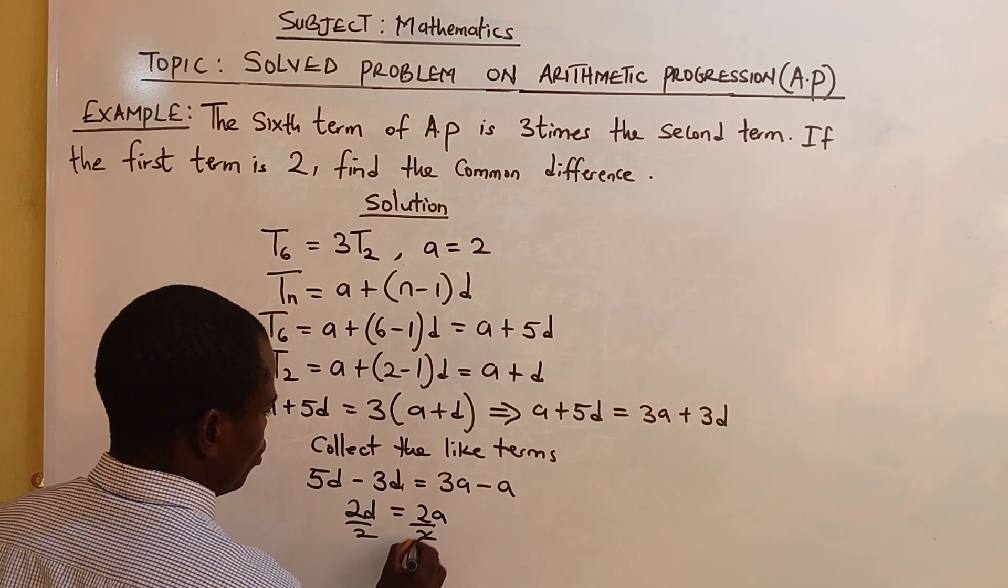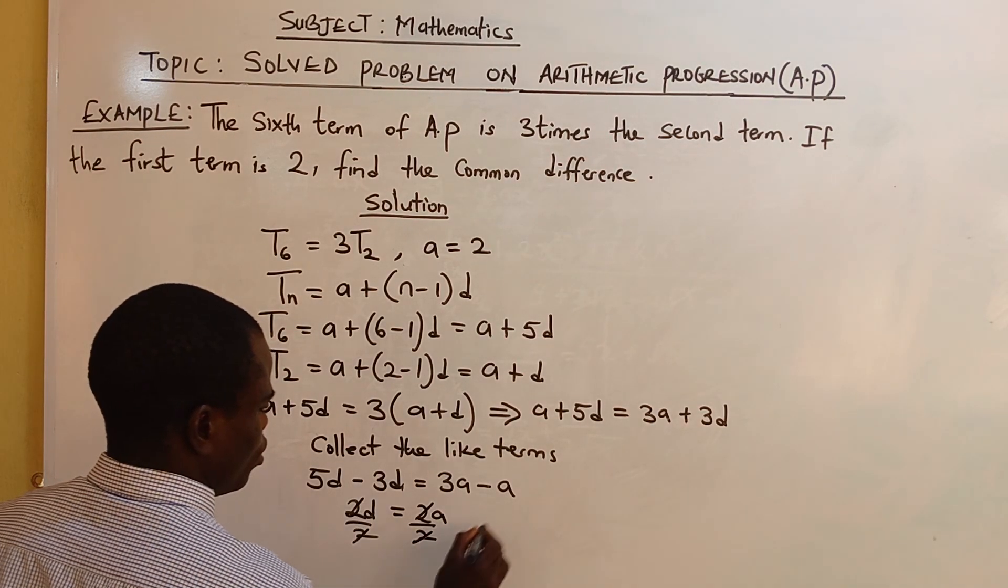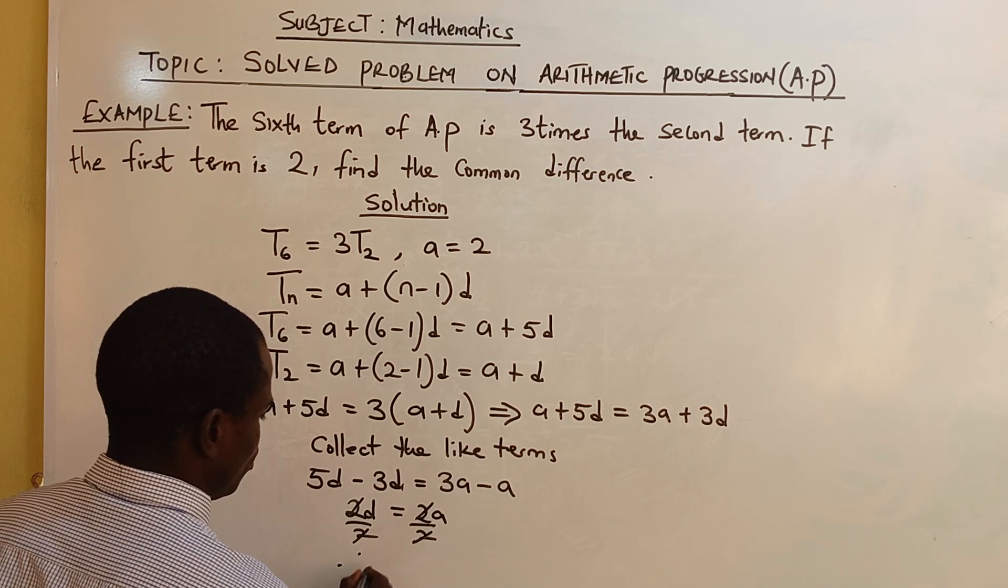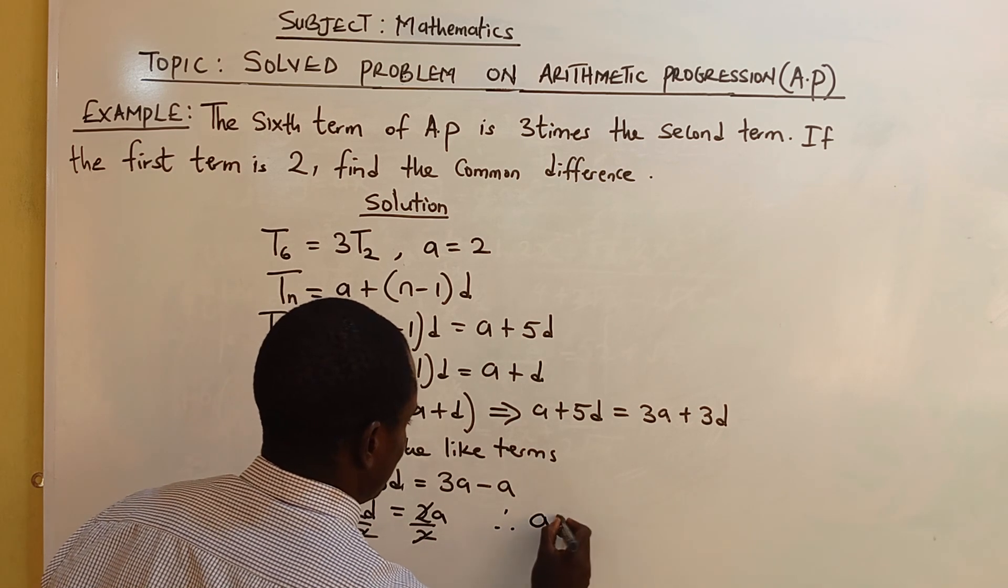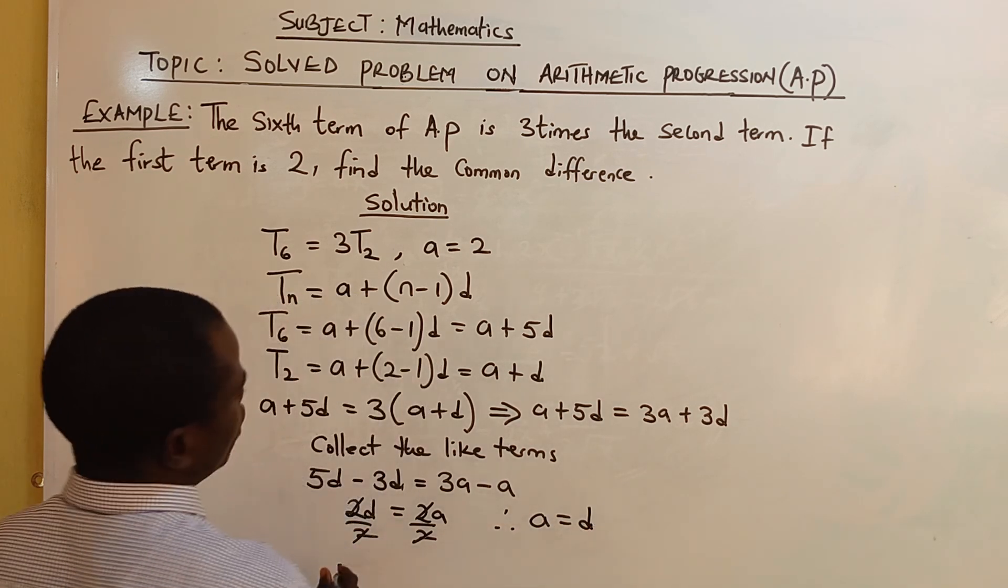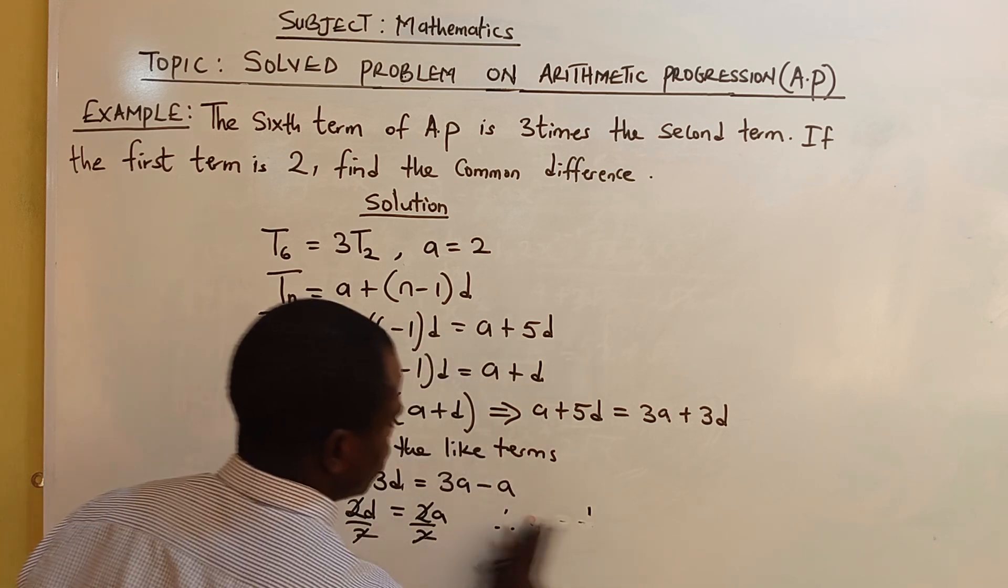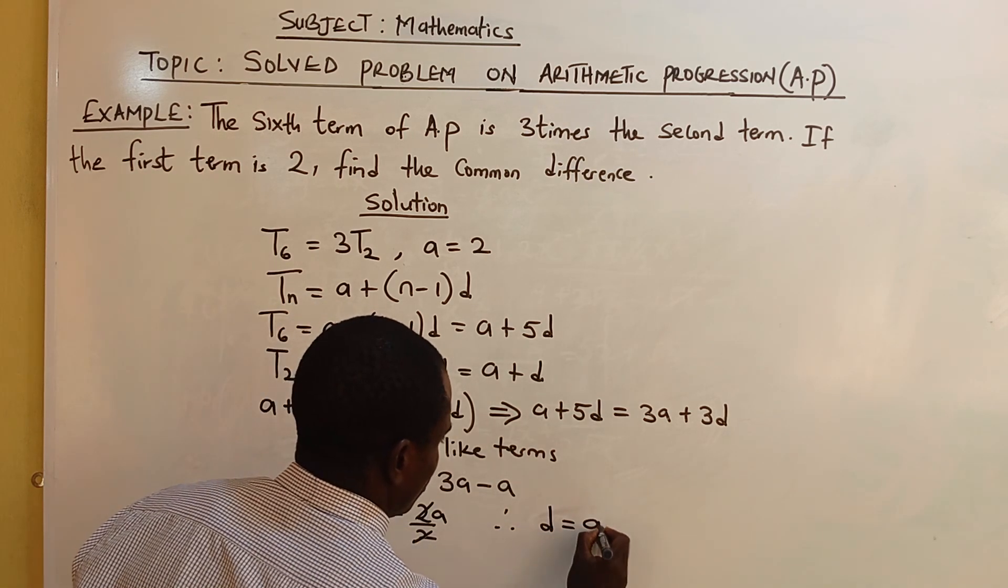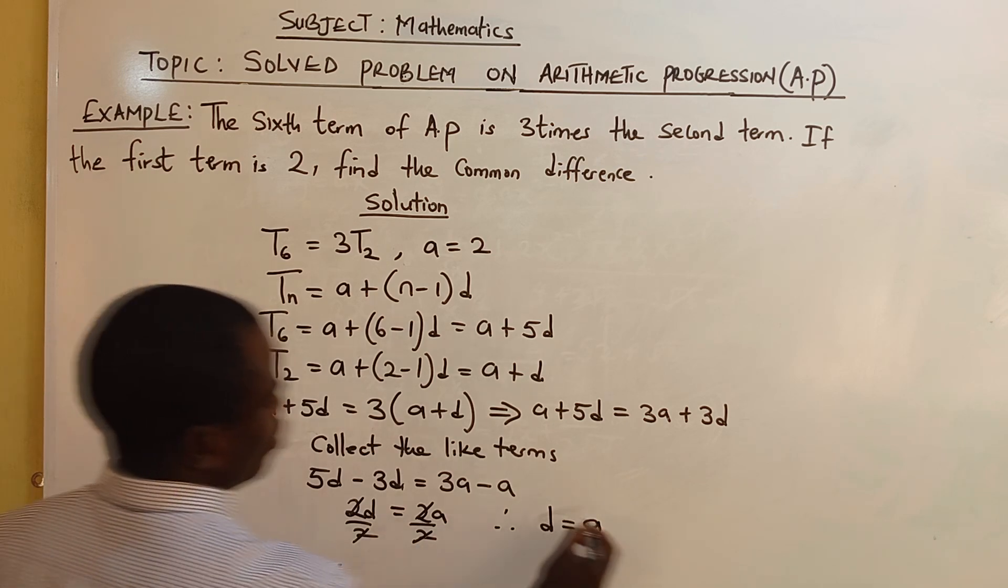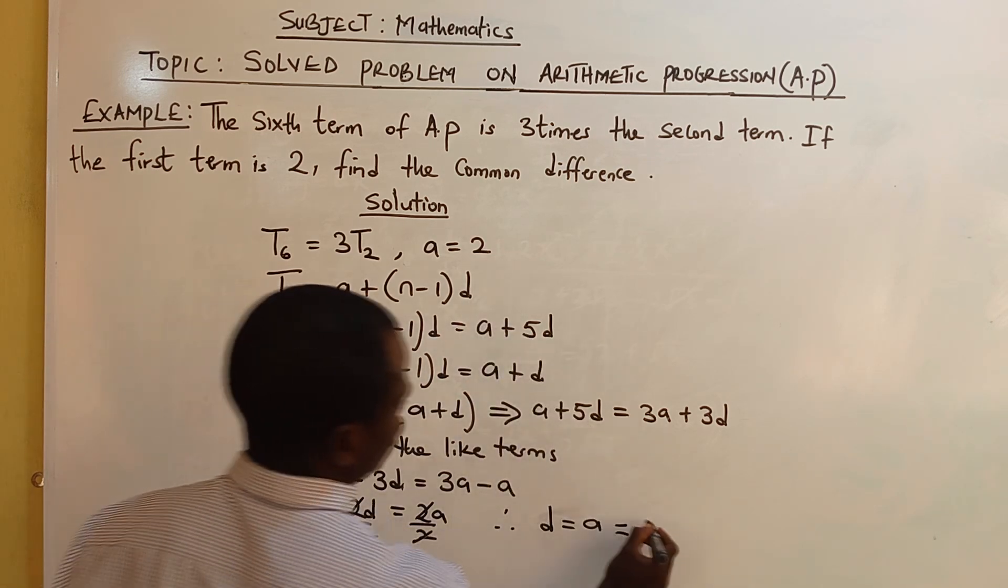Therefore, our A equals to D. What's our A, or we can say our D, therefore, our D equals to A. When 2 cancels throughout, which is equal to what's our A, which is 2.